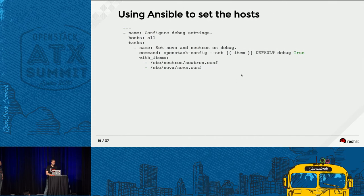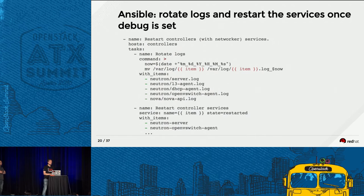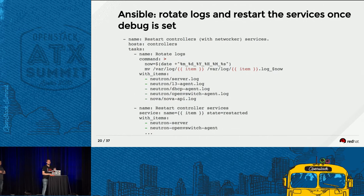I won't go into too much detail — you'll have the link to the presentation later. Basically this very simple Ansible configures the debug flag on the nodes — in this case for Neutron and Nova because we were looking at a Nova/Neutron issue during live migration. The next step is a simple hack to rotate the logs so we start fresh, then restart the services to make sure they pick up the debug flag and start with the new log file.